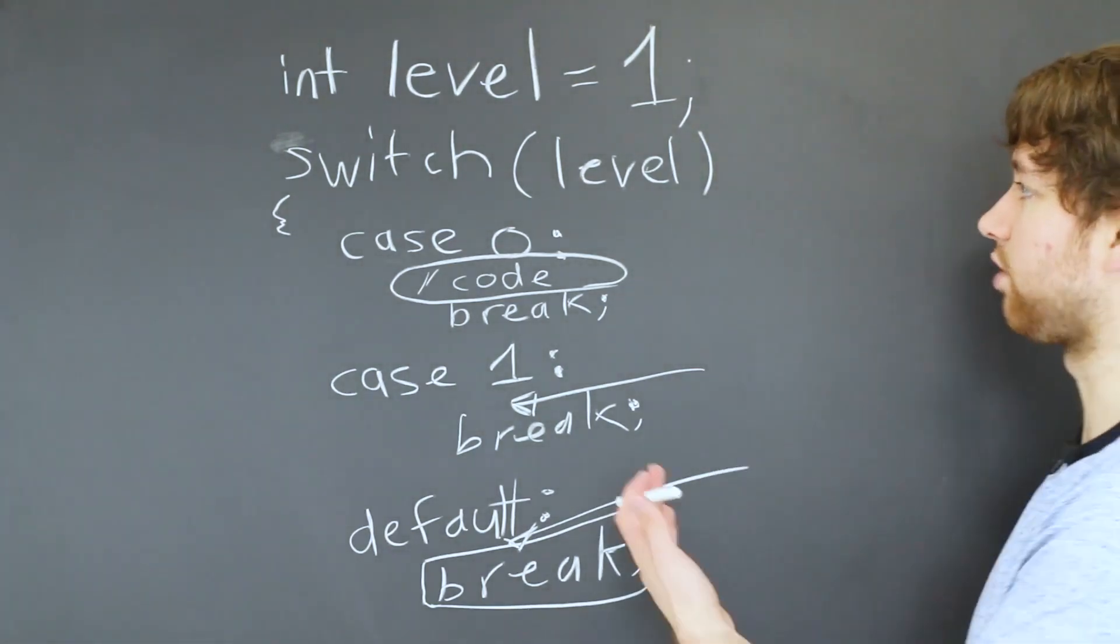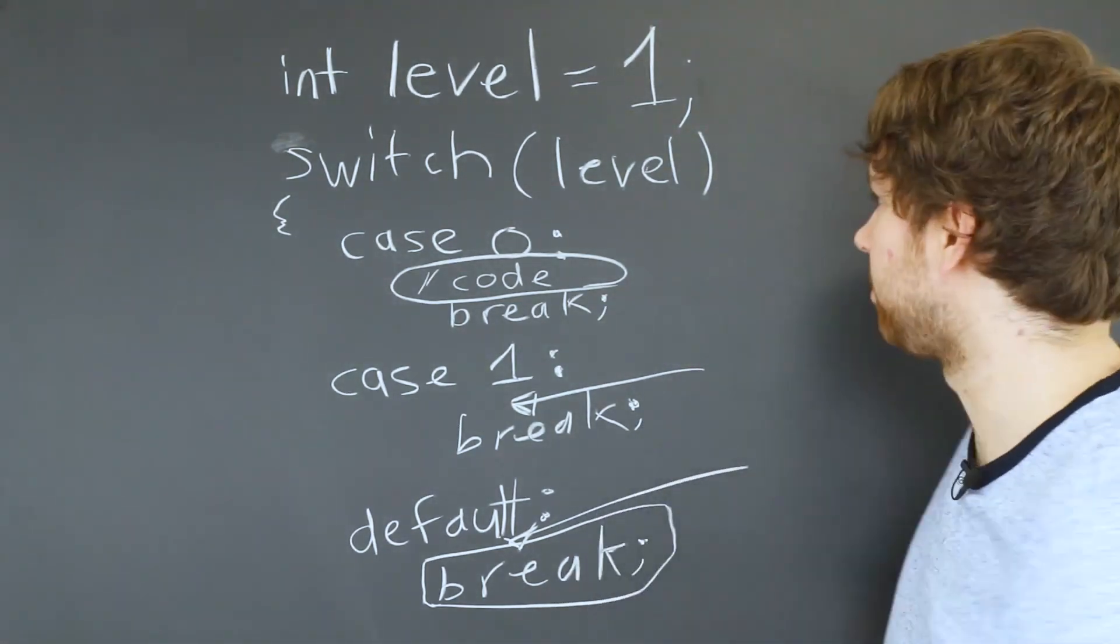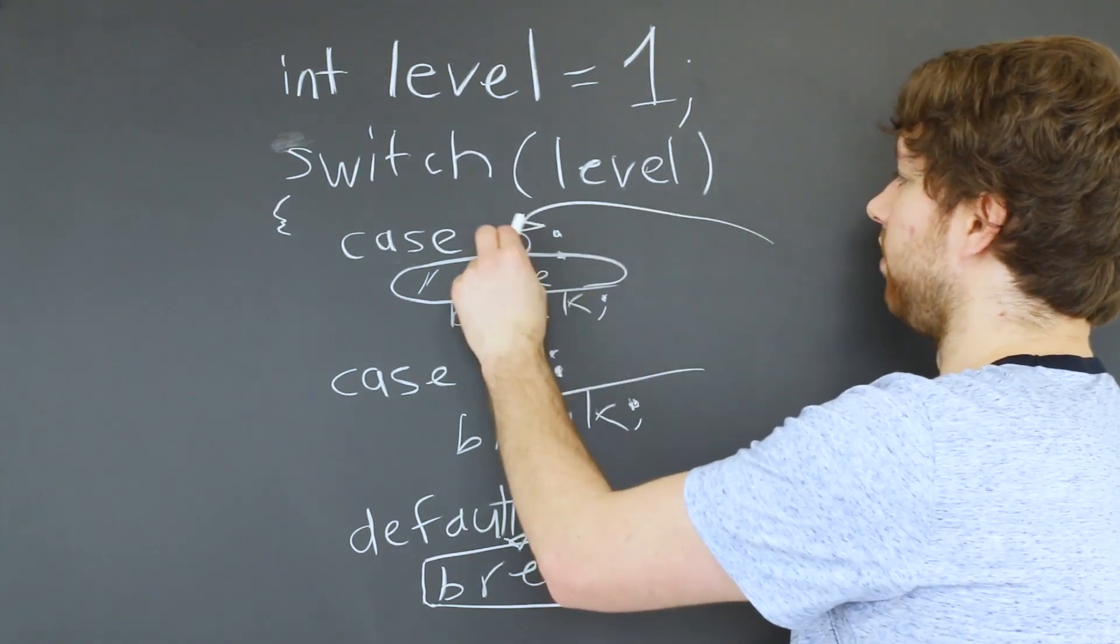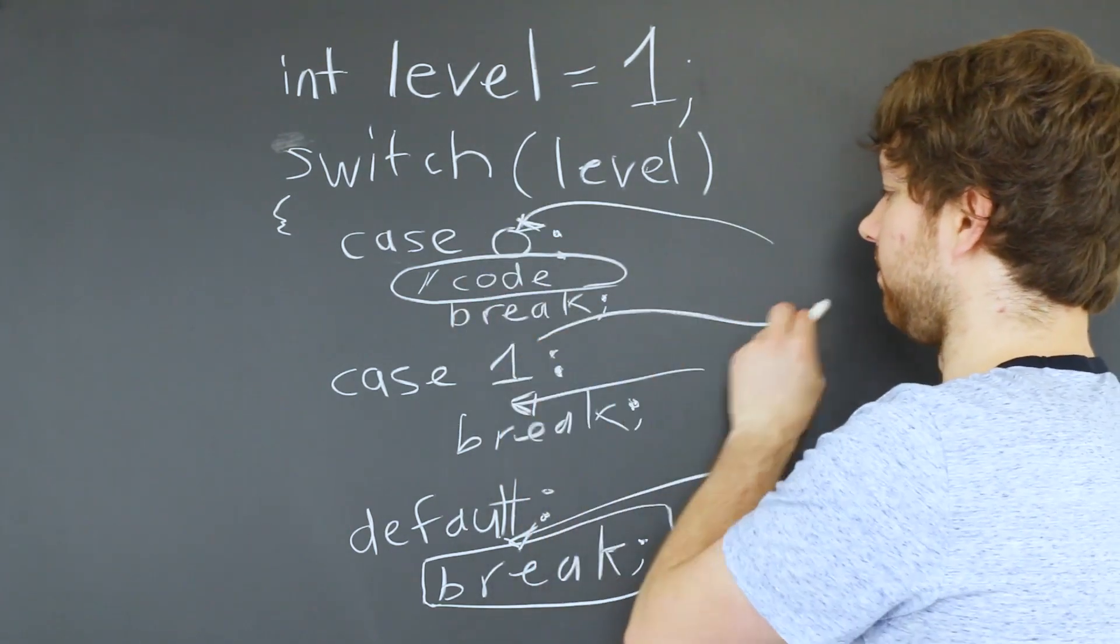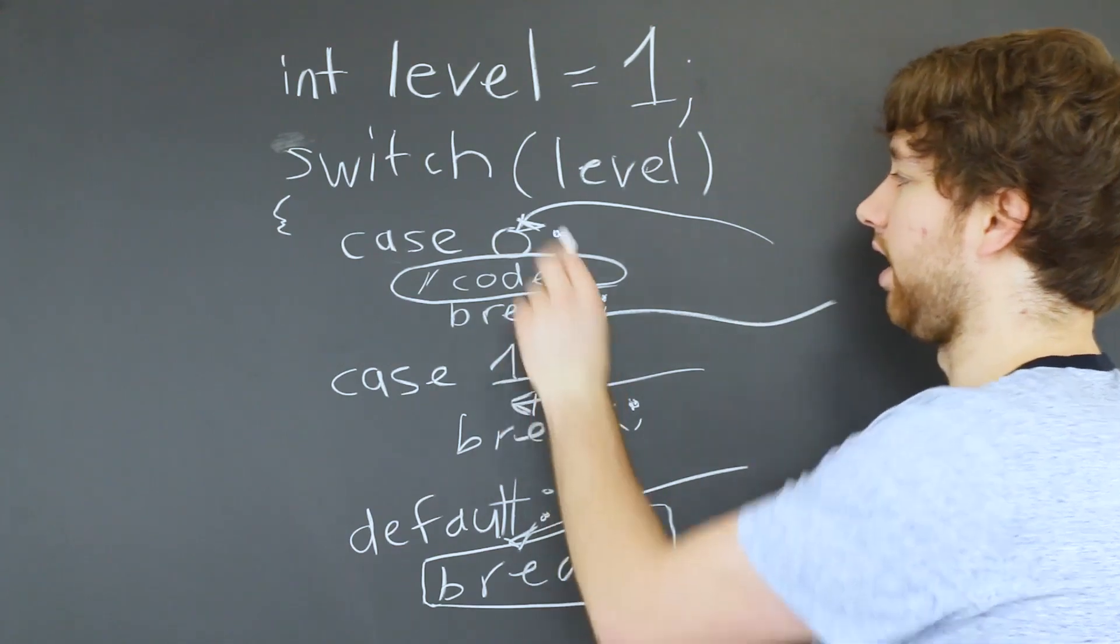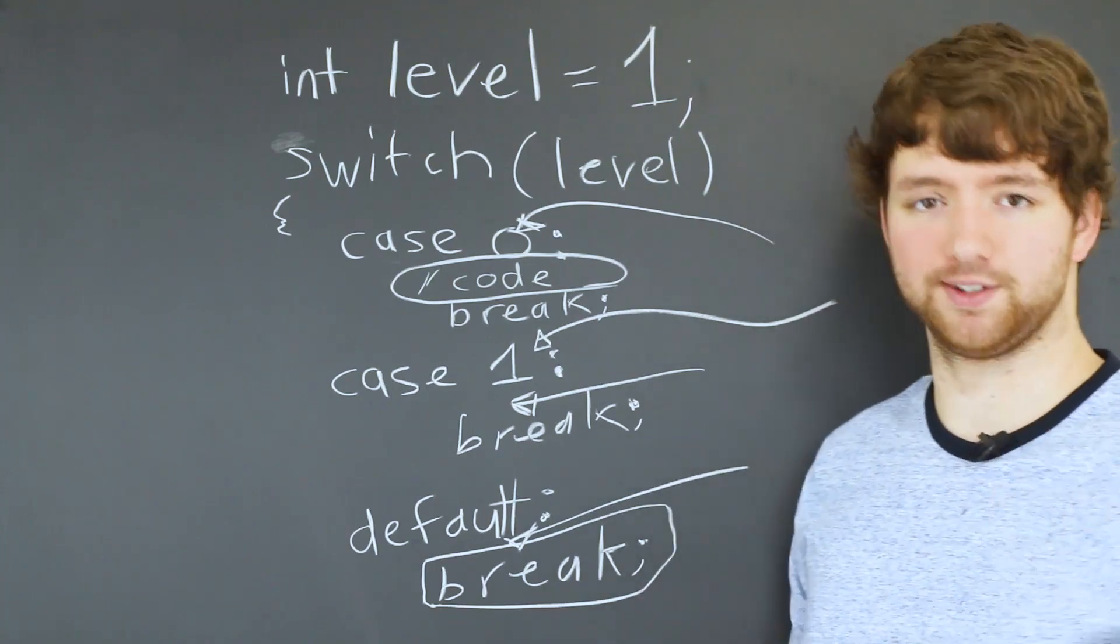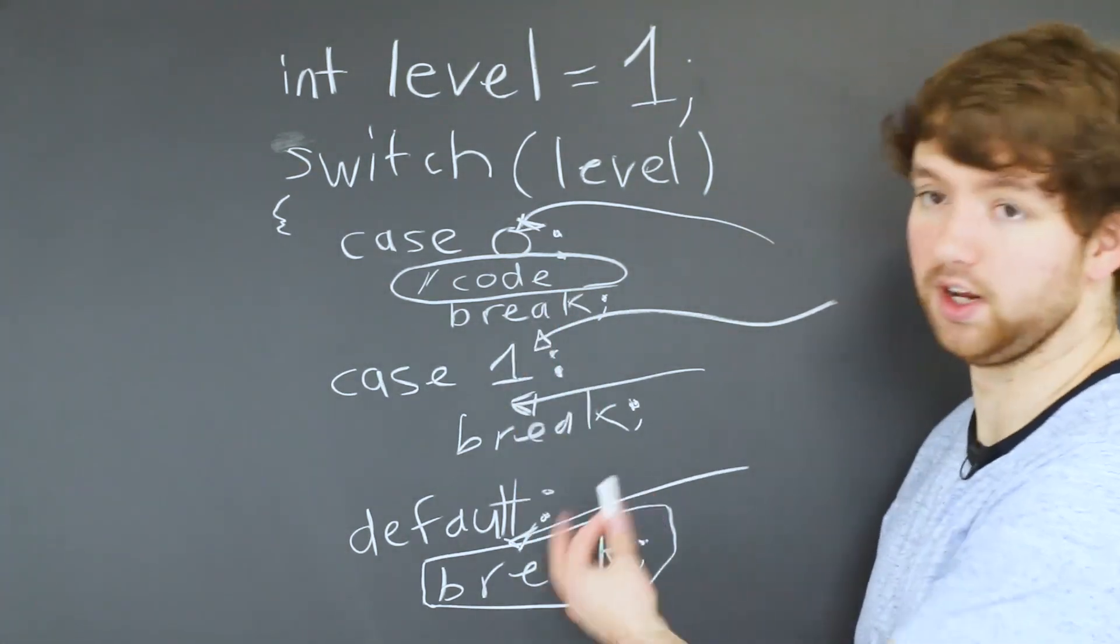So this is the structure of the switch statement. And you can see it's very simplistic in this situation. All we're doing is we're looking at the value of one variable and just a very simple integer. And we're looking at whether it's a zero or one, you could have more cases if you wanted. But just for illustration sake, I'm just using zero and one and a default.